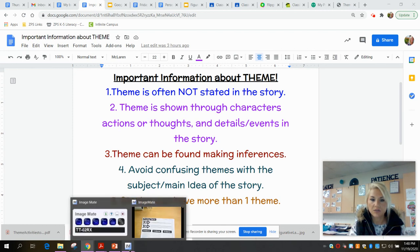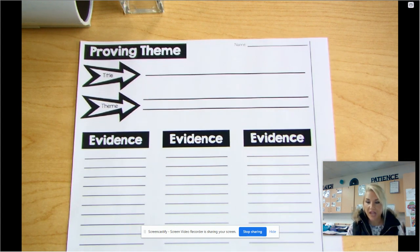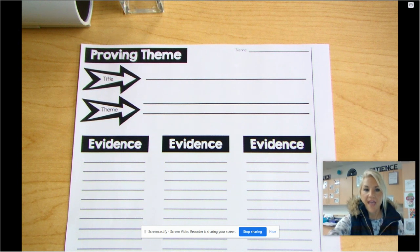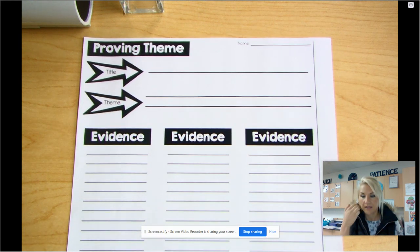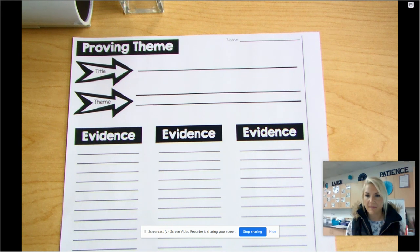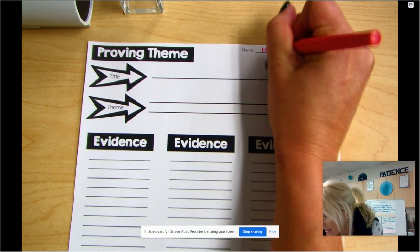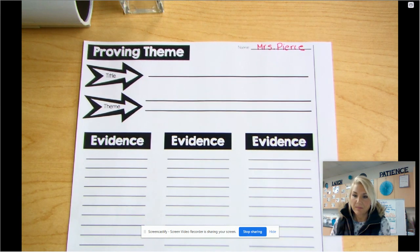I'm going to share my screen — here is our theme paper. Next week when you read Shells, you'll be proving the theme on this paper. It'll be uploaded electronically. You're going to write evidence one, evidence two, and evidence three from your story to prove the theme you select, just like we're going to do with Night of the Spadefoot Toads. The first thing you'll do is put your name on the paper. I'll put Miss Pierce, and then the title of the book: Night of the Spadefoot Toads. Remember, the title is a proper noun, so words longer than three letters need to be capitalized.